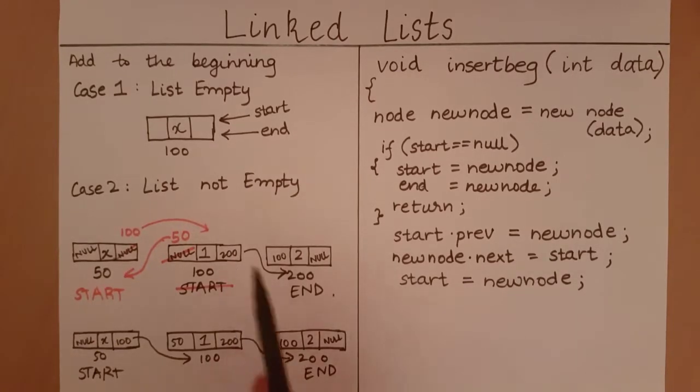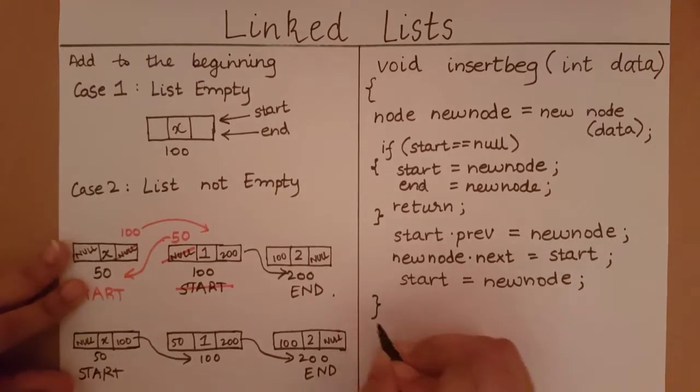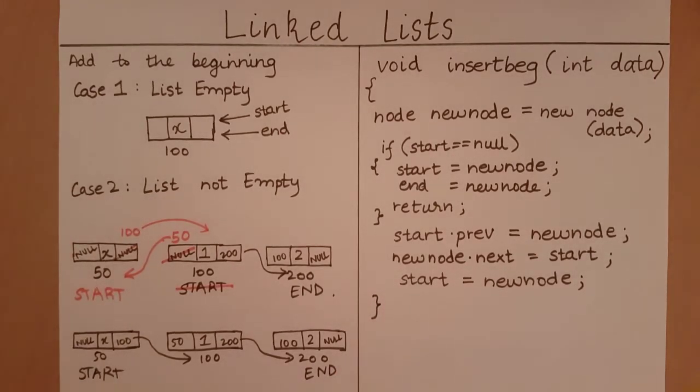After having done the necessary updates, this is what our list looks like. As you can see, we have added the element x to the beginning of the list. With this we come to the end of our function. This is how you insert an element to the beginning of a linked list.